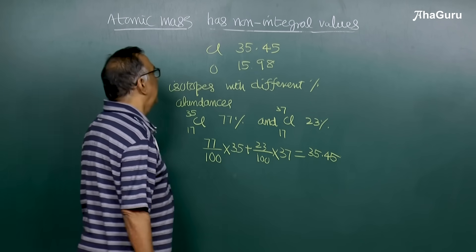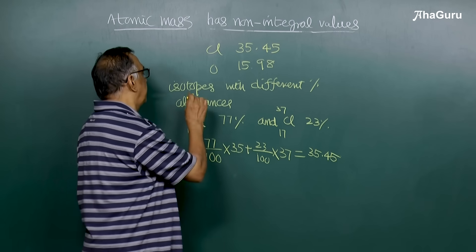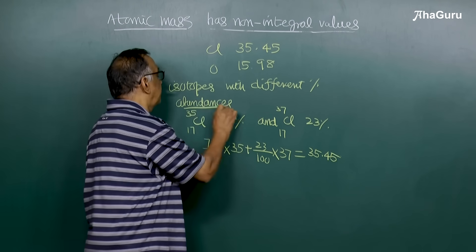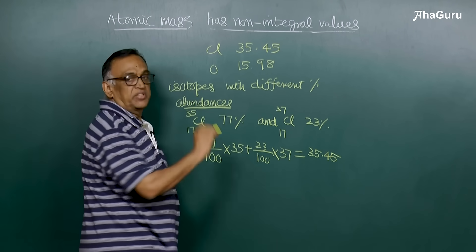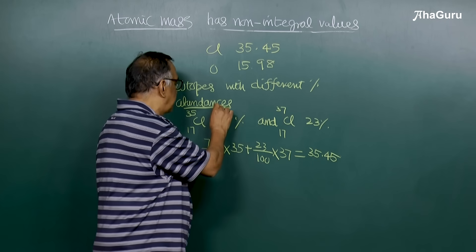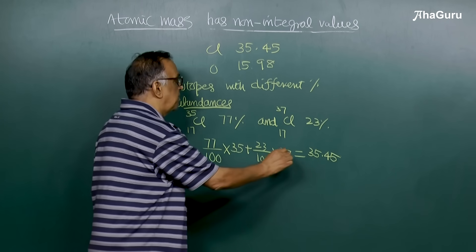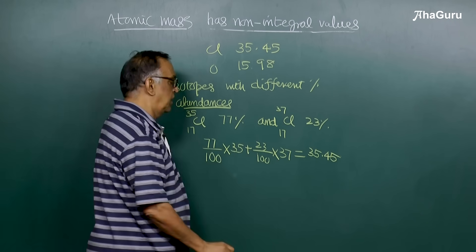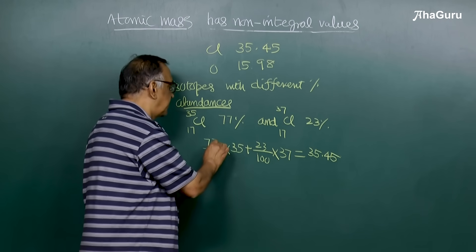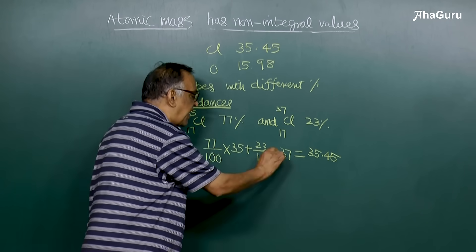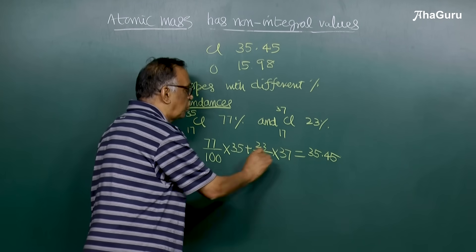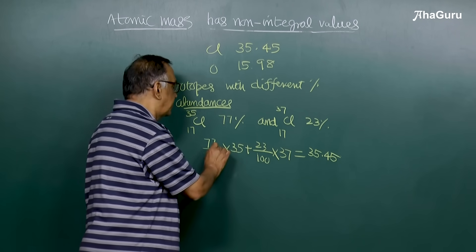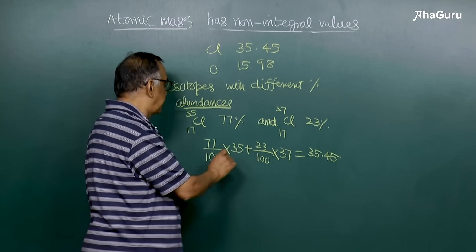So basically, due to the existence of isotopes with different percentage abundance, atomic mass has non-integral values. In other words, it is the weighted average of the isotopic masses. You should not divide this by two — it is the weighted average.